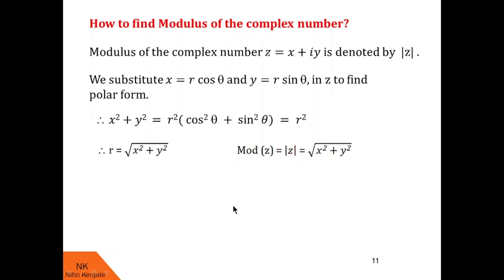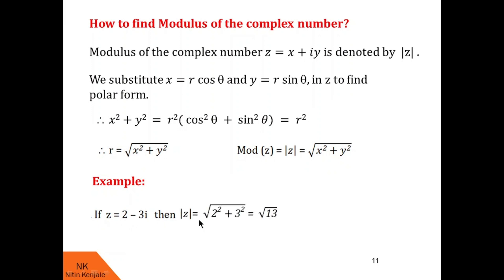Now let us see an example. Consider the complex number z equal to 2 minus 3i. Here x is 2 and y is minus 3. Then mod of z will be root of 2 squared plus minus 3 squared, which is root of 13. I hope you understood how to find modulus of the complex number z equal to x plus iy.